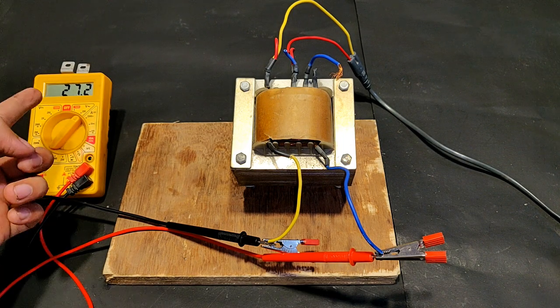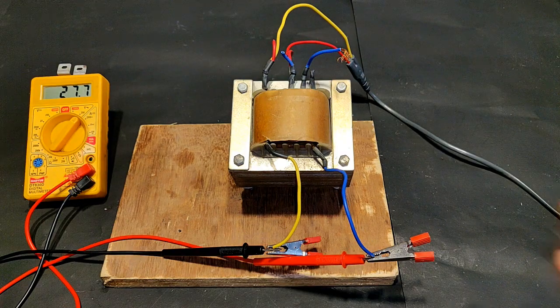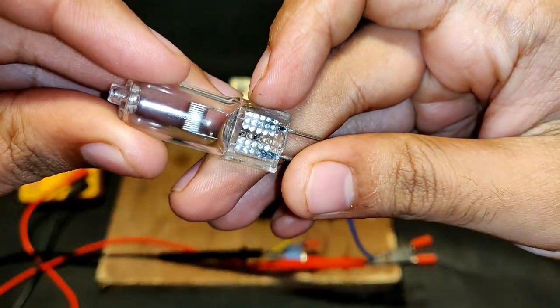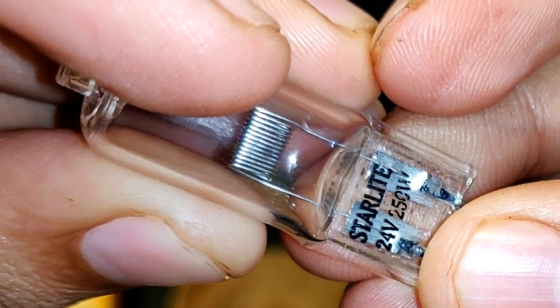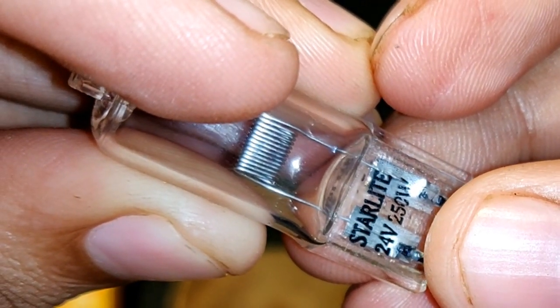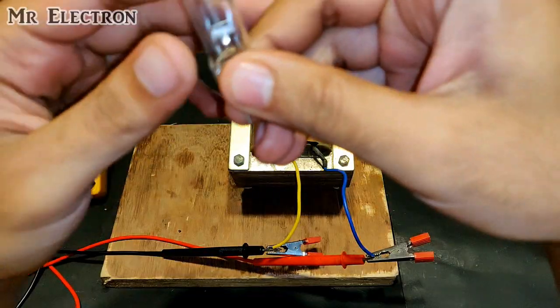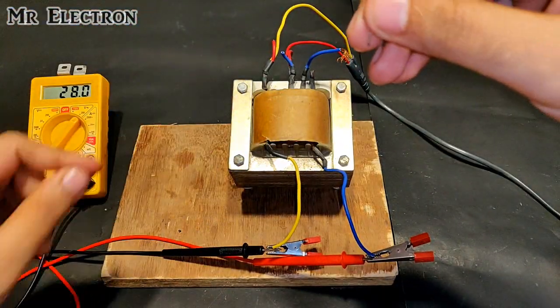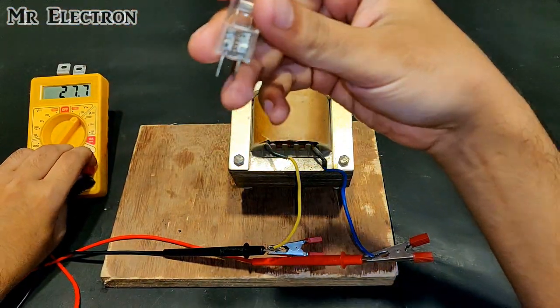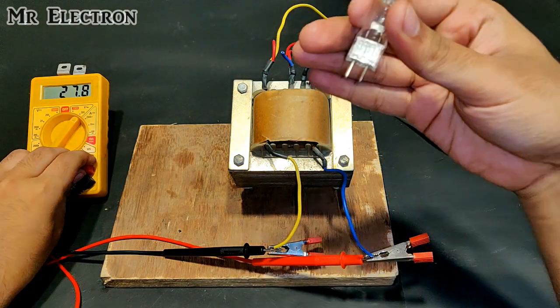This bulb that you see here is 250 watts. You can see here 24 volts and 250 watts written on the side. I'm going to use this bulb to check its output current. 250 watts means it's going to draw 10 amps from this transformer.